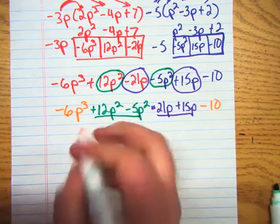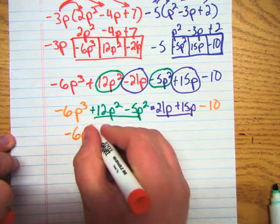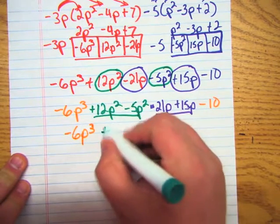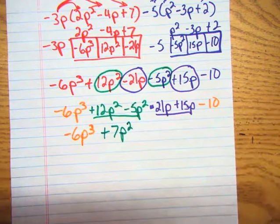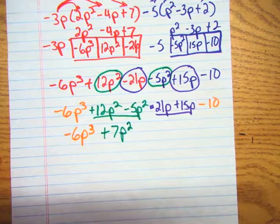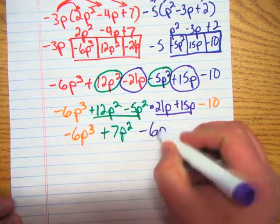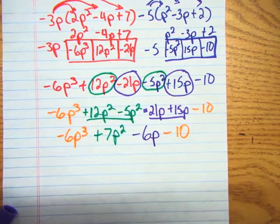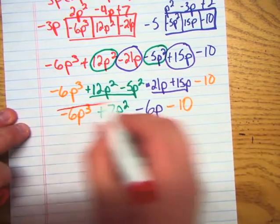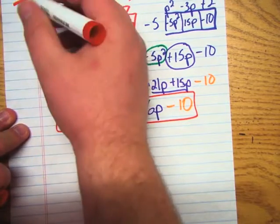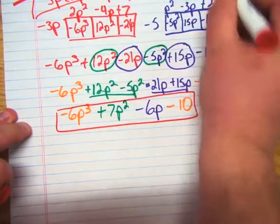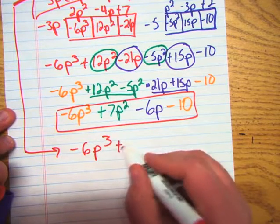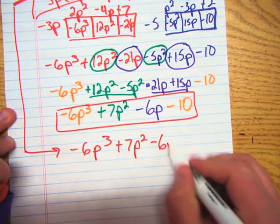So now I've got negative 6p cubed. What's 12 minus 5? Positive 7p squared. And then what is negative 21 plus 15? Negative 6p. And then minus 10 tack on the end, all right? And then since I can't simplify it anymore, that's actually my answer. So all this stuff here, after I've distributed it, becomes negative 6p cubed, 7p squared minus 6p minus 10.